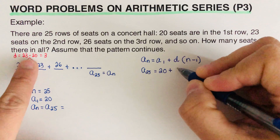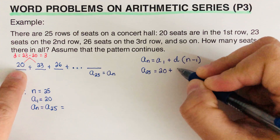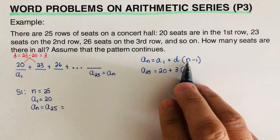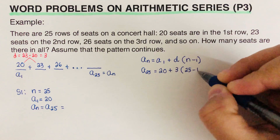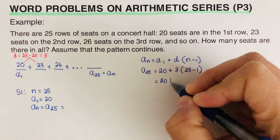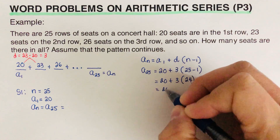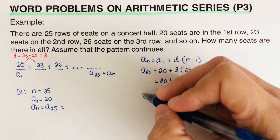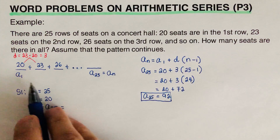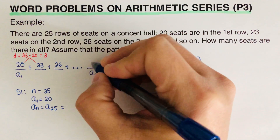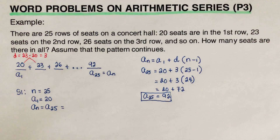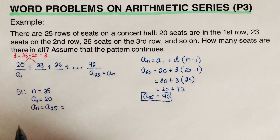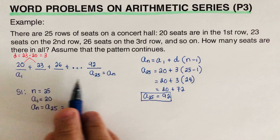I got the difference of 3 by subtracting the second term minus the first term. So the formula becomes: a-sub-25 = 20 + 3 × (25 − 1). Doing the math, the last term comes out to 92. If we write out all the terms from 20 up to the 25th term, the last value is indeed 92.